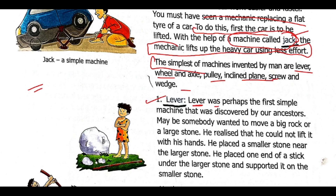The lever is the simplest machine perhaps which has been seen until now. How the discovery happened — maybe we can guess, but we don't know who discovered it because there were no records.